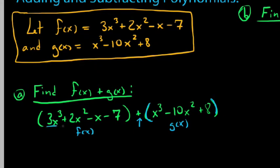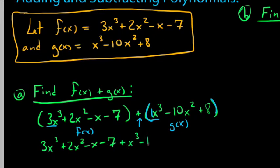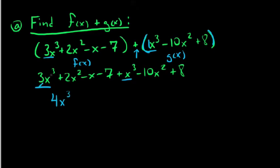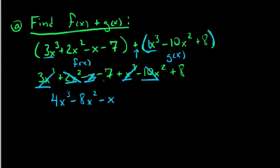So for example, we have 3x cubed and 1x cubed. Let's go ahead and write this out: 3x cubed plus 2x squared minus x minus 7 plus x cubed minus 10x squared plus 8, dropping the parentheses. We combine our x cubed terms: 3x cubed plus 1 more x cubed is 4x cubed. I like to cross them out to show they're out of the way. Moving on to x squared: we have 2 of these x squareds and negative 10, so positive 2 and negative 10 give us negative 8x squared. Then we have just one x to the first, so minus x. And our constants: negative 7 and positive 8 give us positive 1.